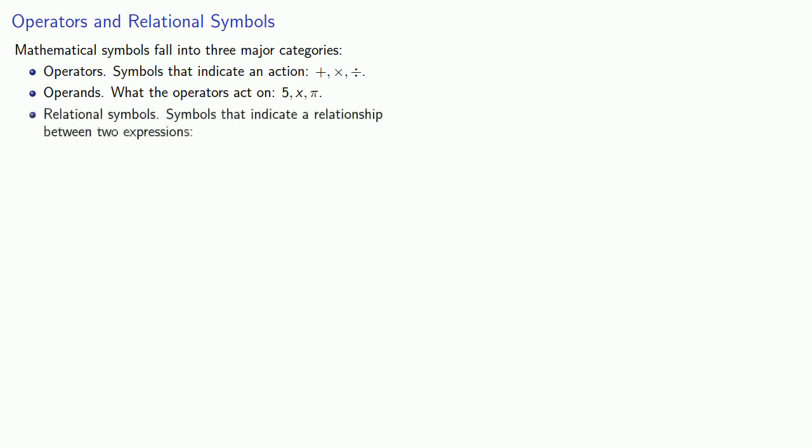Mathematical symbols fall into three major categories. Operators — symbols that indicate an action, like plus, times, or divide. Operands — what these operators act on, symbols like 5, x, or pi. And relational symbols — symbols that indicate a relationship between two expressions, such as equals, greater than, or approximately.